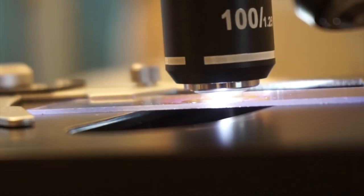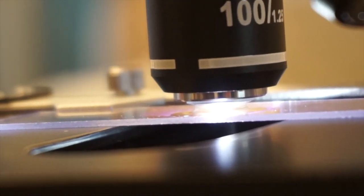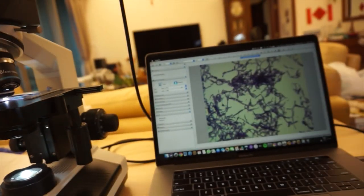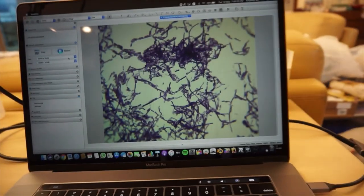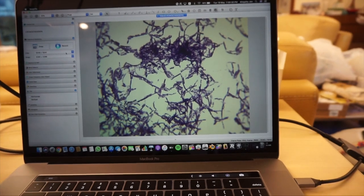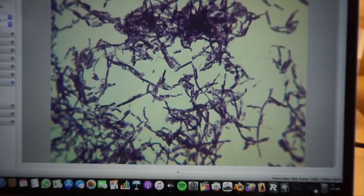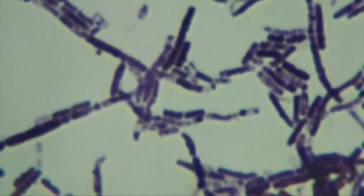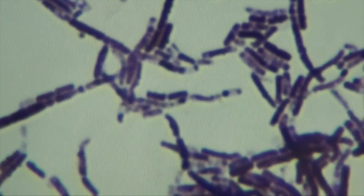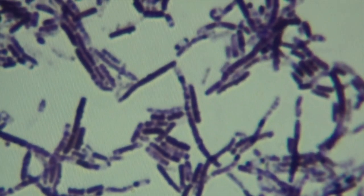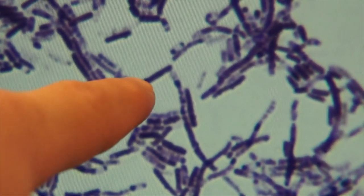So here, what do we see? This is a type of bacteria. As you can see, this is Gram-positive. It's violet, stained by the crystal violet. So here you can see the individual bacteria.